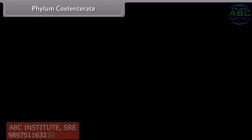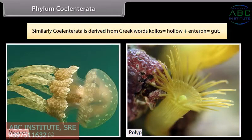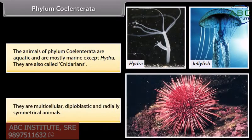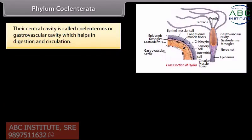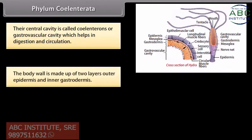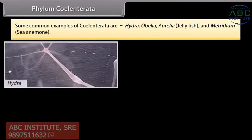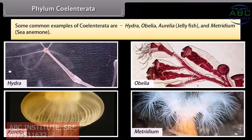Phylum Coelentrata is derived from Greek words 'koilos' meaning hollow, plus 'enteron' meaning gut. The animals of phylum Coelentrata are aquatic and mostly marine except Hydra. They are also called cnidarians. They are multicellular, diploblastic and radially symmetrical animals. Their central cavity is called coelenteron or gastrovascular cavity which helps in digestion and circulation. The body wall is made up of two layers: outer epidermis and inner gastrodermis. Some common examples are Hydra, Obelia, Aurelia, jellyfish and Metridium (sea anemone).